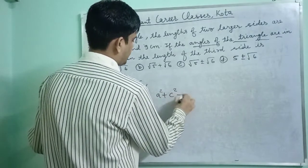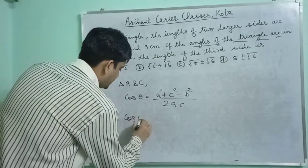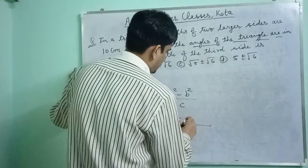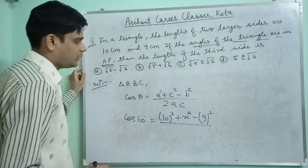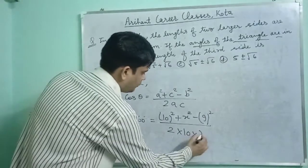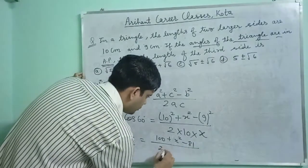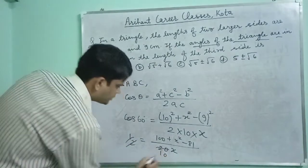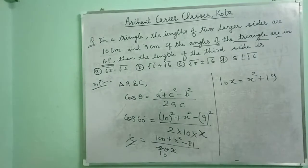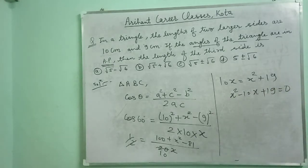In triangle ABC, cos theta equals (A² + C² − B²) / (2AC). With theta equal to 60 degrees, A equal to 10, B equal to 9, C equal to X: 1/2 equals (100 + X² − 81) / (20X). So 10X equals X² + 19, giving the equation X² minus 10X plus 19 equals 0.